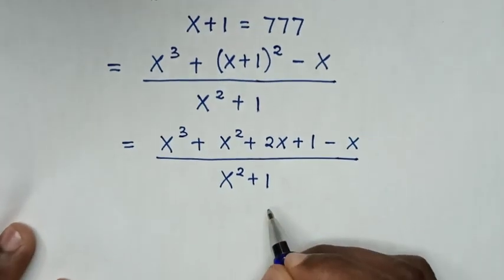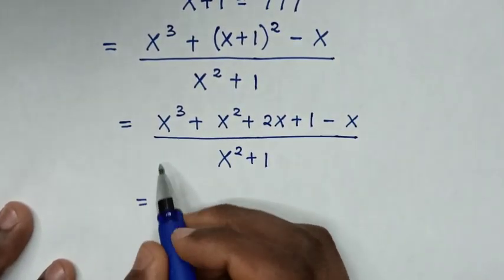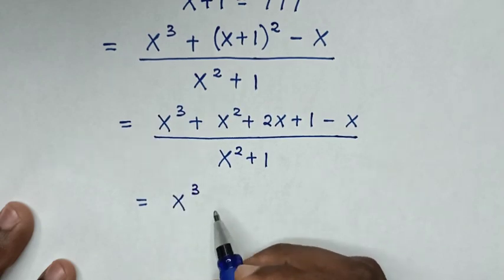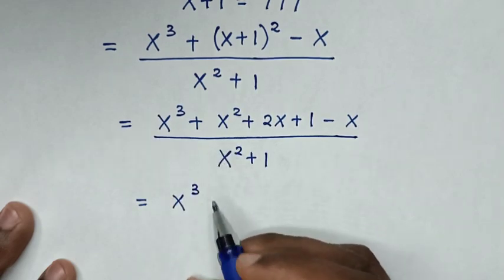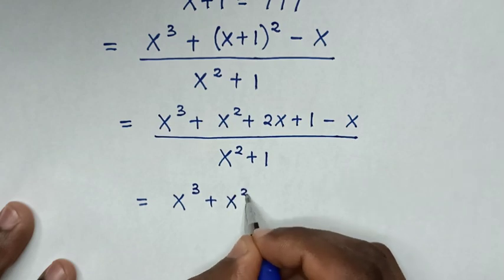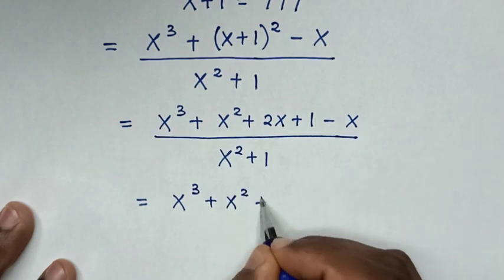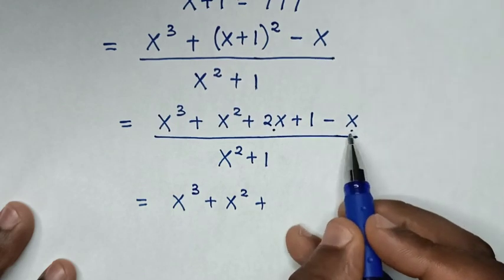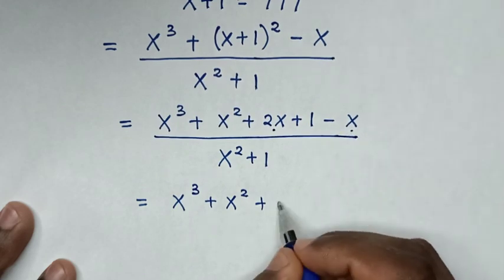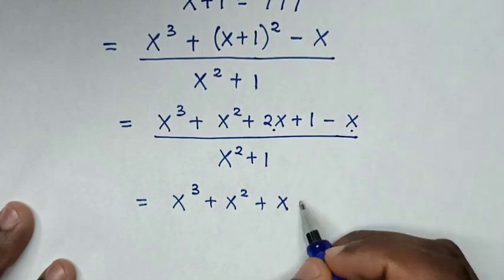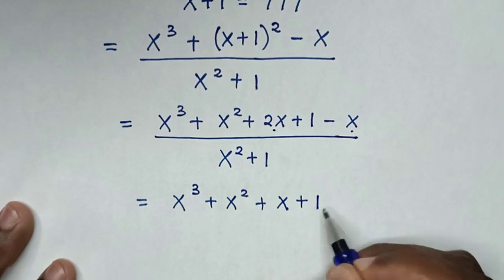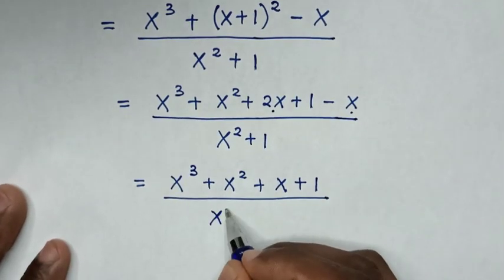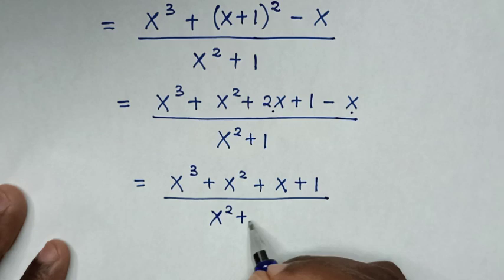Then in the next step, it will be equal to: from here x power 3, then plus x square, then plus 2x minus x is x, so the result is x, then plus 1, over x square plus 1.